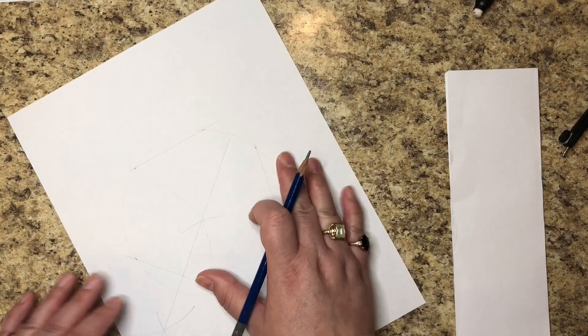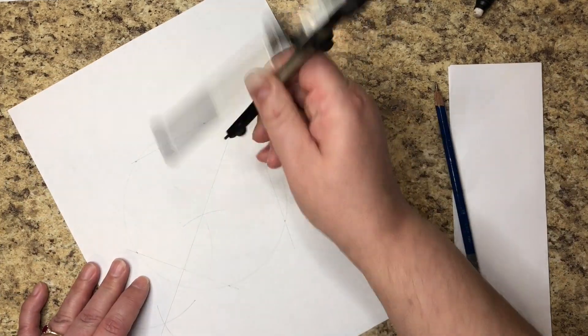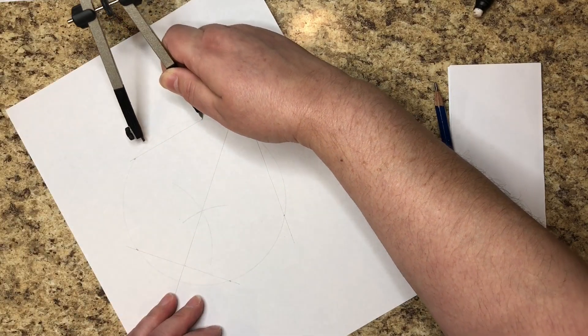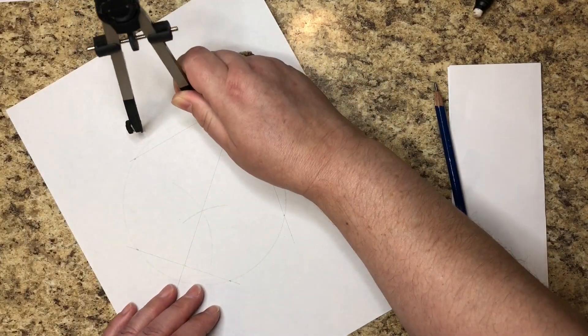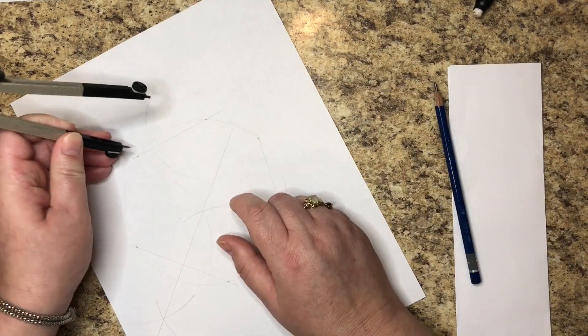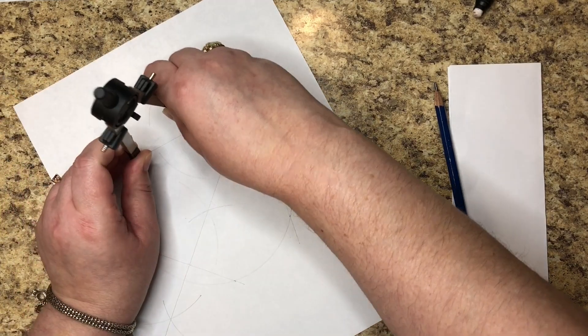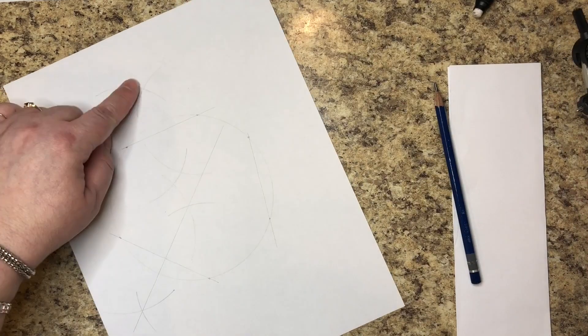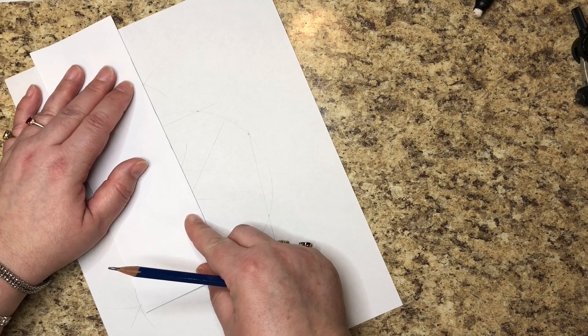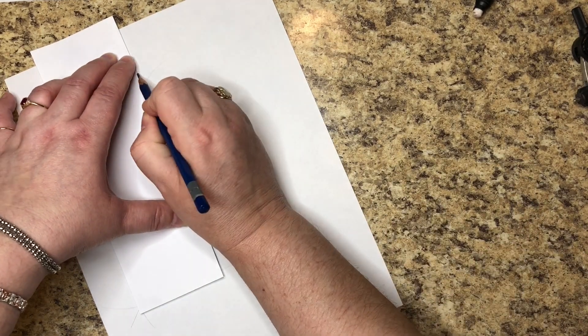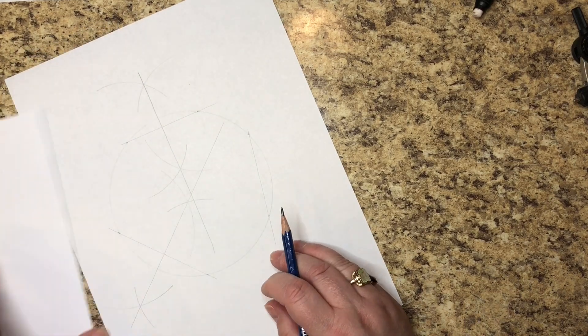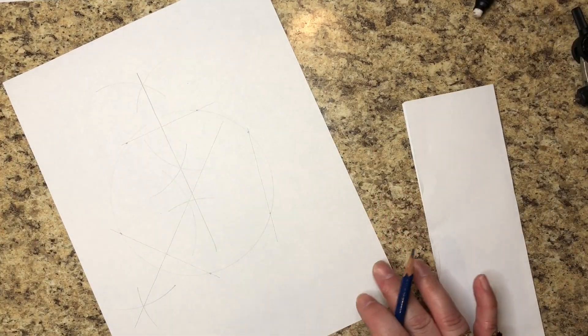All right, we're going to draw it all the way through the circle. We're going to do the next line. Do the same thing. I'm going to draw an arc above and arc below. Don't worry about crossing lines. Just keep track of where your marks are. This set and this set. We're going to connect where they cross. We're going to draw all the way through the circle.